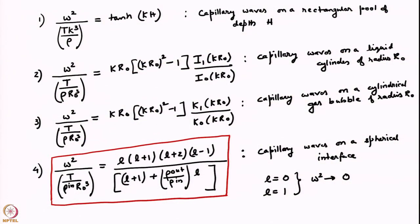We were looking at the surface tension driven oscillations of a spherical interface separating two immiscible fluids. This was the general dispersion relation that we had found. The restoring force was purely due to surface tension, and this dispersion relation governs the oscillation frequencies for shape oscillations. The parameter L is allowed to be integer values 0, 1, 2, 3 and so on — it comes from the subscript of the Legendre polynomial P_L. We had also mentioned that for L=0 and L=1, the frequency evaluates to 0, and we were trying to understand the reason why this frequency is 0. Let us continue with that.